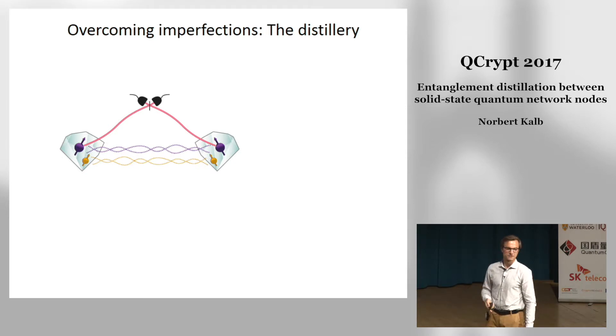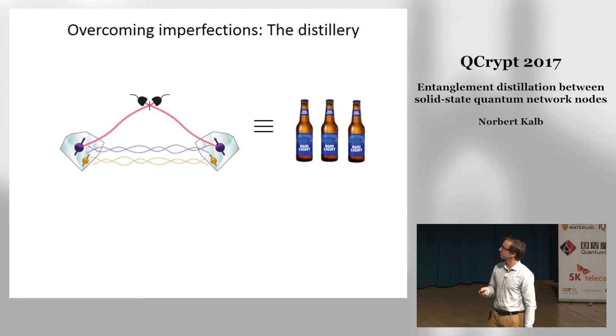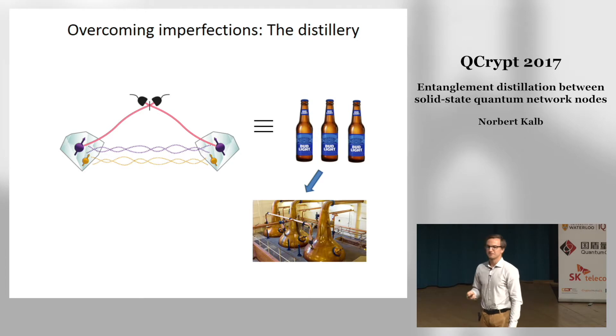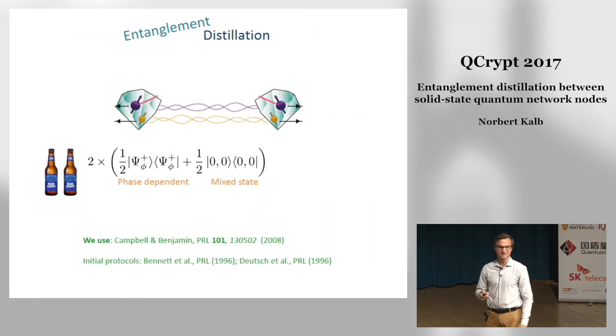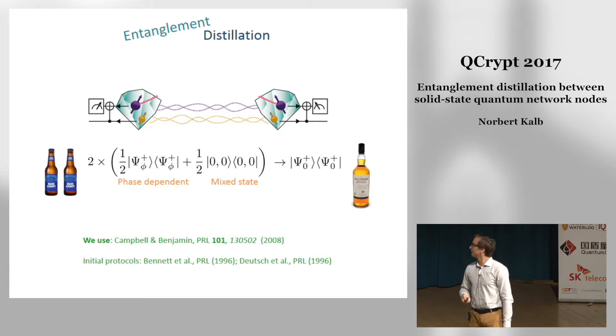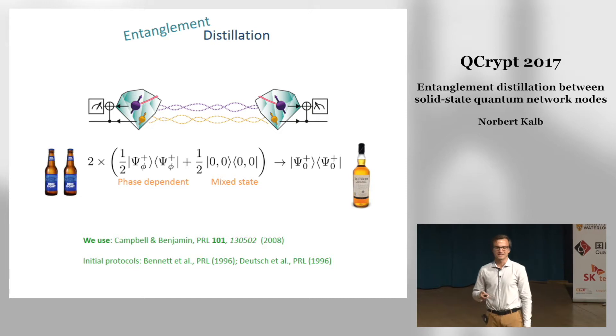This can be overcome—this problem of having these very mixed states—and one particular example is that we have two of these states. Now that doesn't really help you initially but you can equate them to a certain type of beer. And this is not where the analogy between alcohol and entanglement ends because I can take my beer, put it into a distillery and out comes a lower quantity of high quality whiskey. The same holds for entangled states. This protocol is called entanglement distillation and if you have two of these states, one on our NV centers and one on our nuclear spin memories, we can take these two beer bottles, put it into our quantum distillery and out comes a high quality entangled state. In our case the distillery consists of local operations, measurements and classical communication.